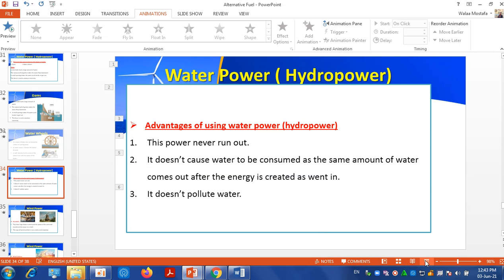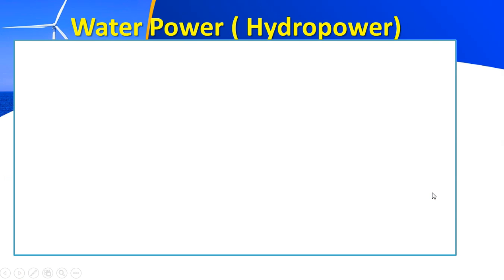Good afternoon. This is actually the second part of the lesson that we have been discussing in the online session. If you remember, we were speaking about water power and how we can get energy from water. We said that we have two ways to harness the power from water: through the dam and the water wheel. We discussed how we get the power from the dam and from the water wheel.